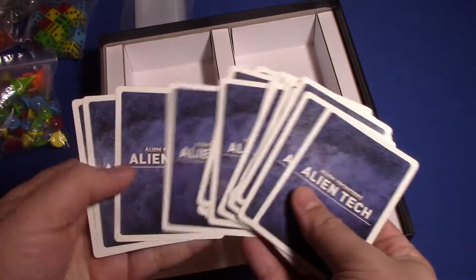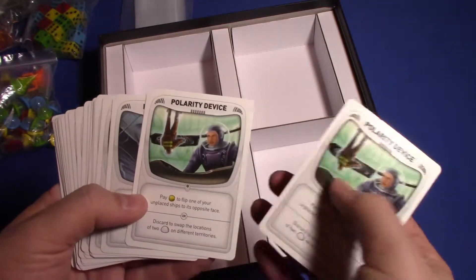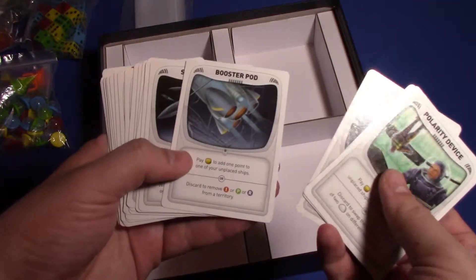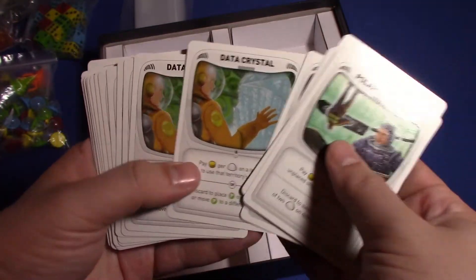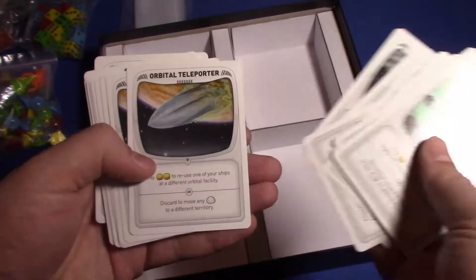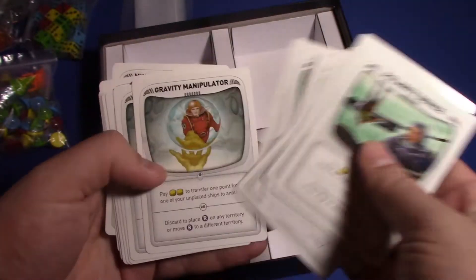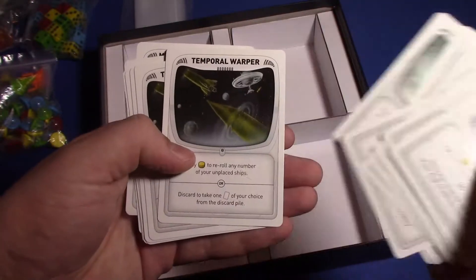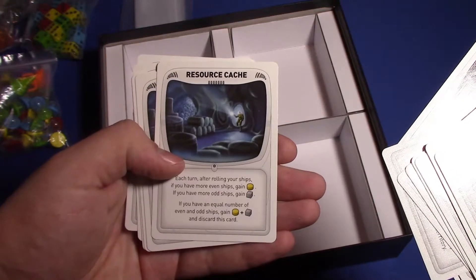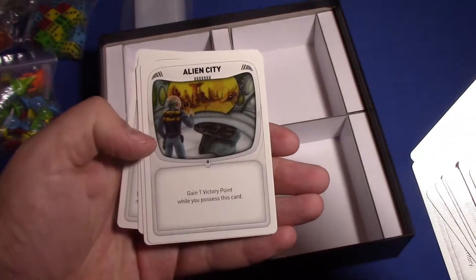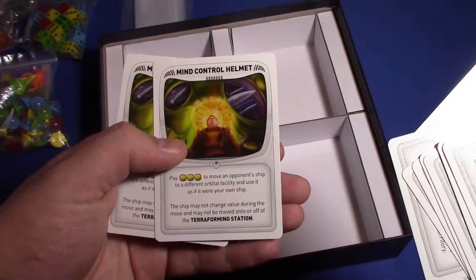Anyway, we've got all these cards. Let's see, we have Polarity Device, two of those, Booster Pod, Stasis Beam, Data Crystal, there's two of each card it looks like, Orbital Teleporter, Holographic Decoy, Gravity Manipulator, Temporal Warper, Resource Cache, Alien City, oh there's only one of those, Alien Monument, one of those, Mind Control Helmet, two of those.